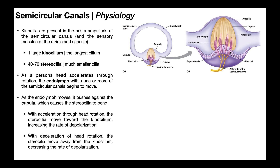Each of these hair cells embedded within the folds of the crista ampullaris has one large kinocilium — always the longest cilium — and then around it there are 40 to 70 smaller stereocilia. A memory tip: stereocilia and smaller both begin with an S. These cilia are all embedded within the cupula, and around the cupula we have endolymph, which circulates from the ampulla on one side, all around the canal to the other side.